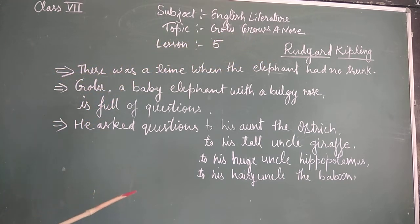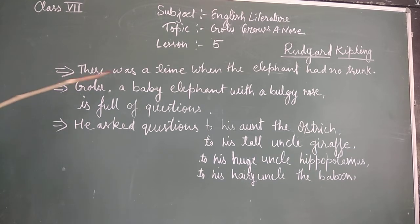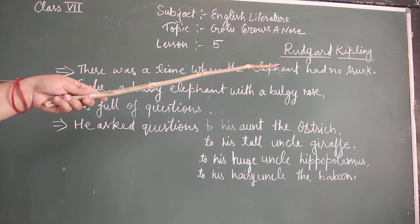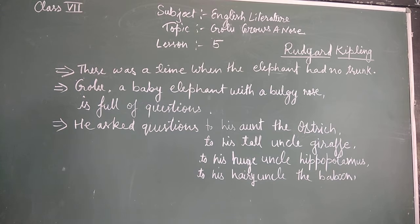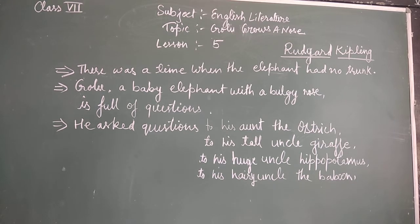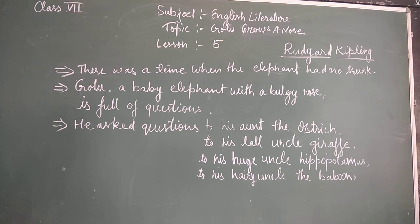In this chapter, the writer says that there was a time when the elephant had no trunk. Long long ago the elephant had no trunk. He had only a bulky nose, as big as a boot. He could wiggle it from side to side but couldn't pick up things with it. Elephants could not pick up things with the bulky nose.